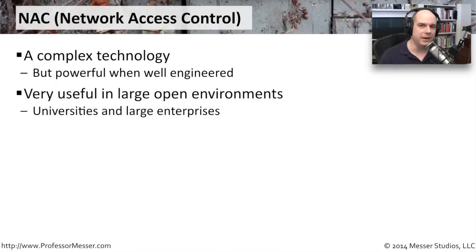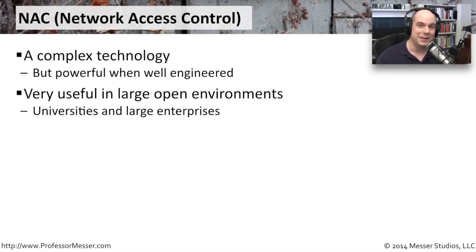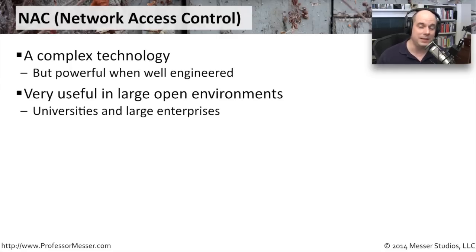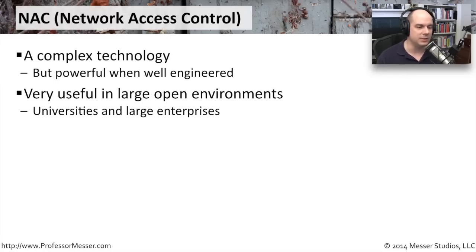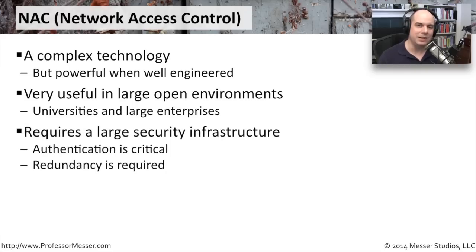You most often see this in very large environments. You're not going to run into a lot of network access control requirements if you're in a building of 10 people. You don't have to worry so much in that small office about who has access to the network — you can see they're sitting at their desk. But in universities, large enterprises, and environments that are very diverse with people in many different locations, geographically spread out, it makes a lot of sense to think about some method of network access control.